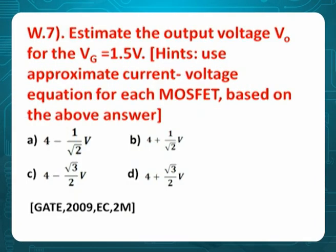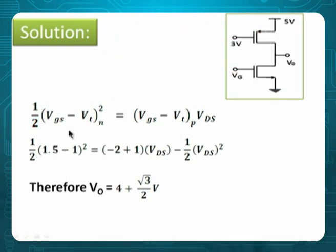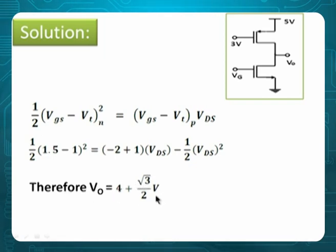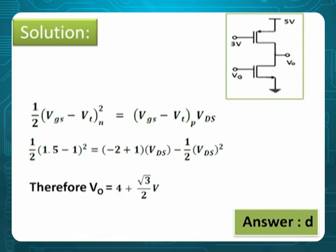Problem 7: Estimate output V0 for Vg = 1.5 V. This is also a linked problem. Since the two transistors are in series, their currents are equal: (1/2)·(VGS − Vt)_N² = (VGS − Vt)_P · VDS_P − VDS_P²/2. With Vg = 1.5 V and Vt = 1 V, substituting gives V0 = (4 + root(3))/2. Therefore option is D. This analysis covers series N-MOS and P-MOS combination in CMOS.